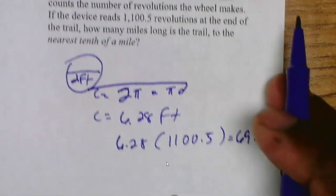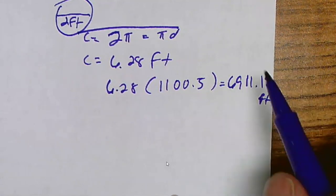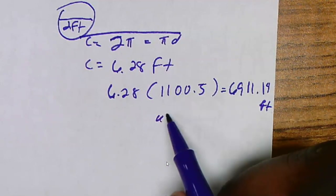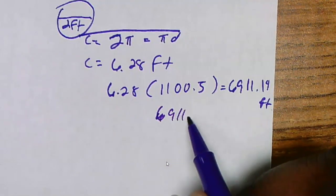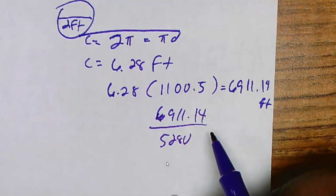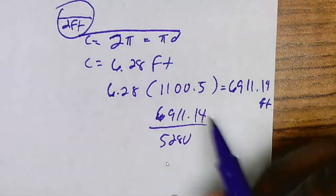Now keep in mind, that one mile is 5,280 feet. So I wonder how many miles exist in that many feet. So I would take that many feet, 6911.14, and divide it by 5280. And that gives you basically 1.3 miles.